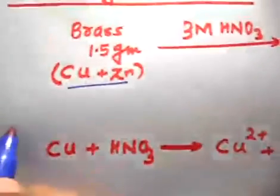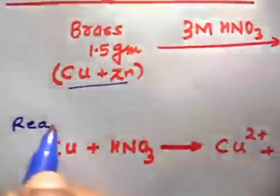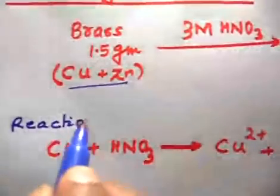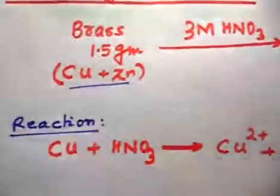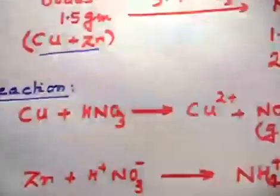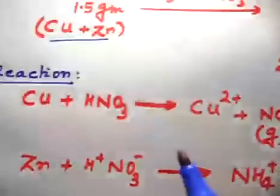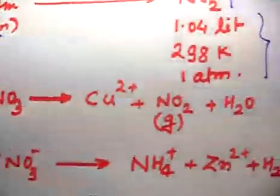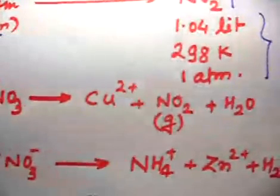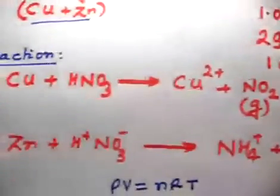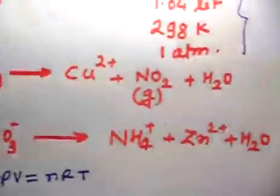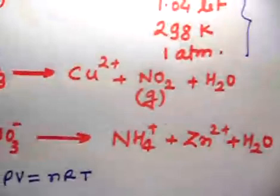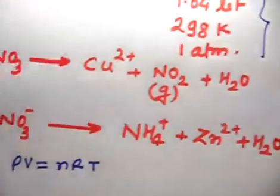The reactions happening in this alloy are: copper reacts with HNO3 to form Cu²⁺, NO2 gas, and H2O. Zinc reacts with HNO3 to form NH4⁺, Zn²⁺, and H2O. My first target is to balance these equations.